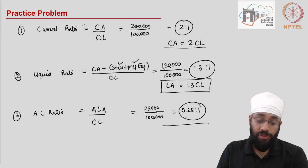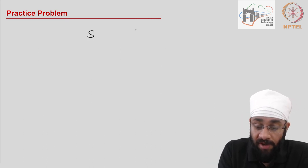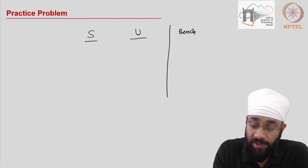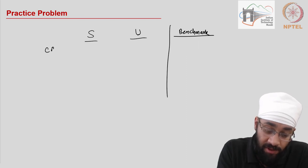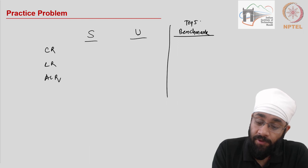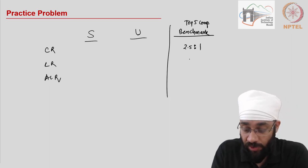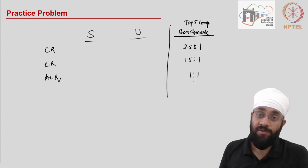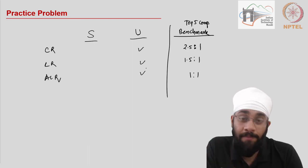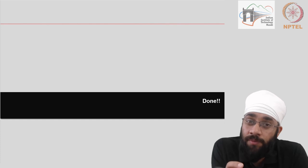That is the short-term position of the business. To comment on whether it is satisfactory or unsatisfactory, you need a benchmark to compare against. For example, if the top five competitors have an average current ratio of 2.5:1, a liquid ratio of 1.5:1, and an absolute liquid ratio of 1:1, then you would say the short-term financial position is unsatisfactory compared to the industry and our top five competitors. That is how you comment on the short-term financial position of a company.